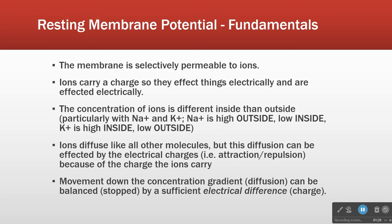Point number three: the concentration of ions is different inside the cell than it is outside. That was the table of values we looked at yesterday. In particular, sodium and potassium have opposite relationships. Sodium is high outside but low inside. Potassium is the opposite — high inside, low outside.